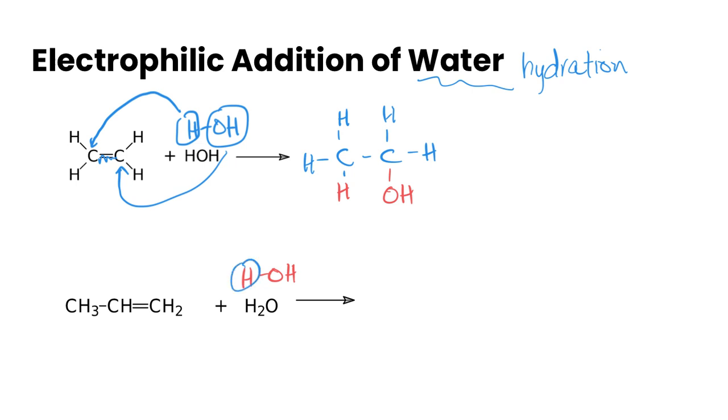In this scenario, this first carbon has two hydrogens attached whereas this one only has one hydrogen attached. So the H will add to this first carbon, the OH will add to the second carbon, and we break that double bond.